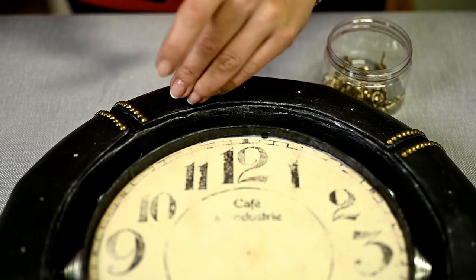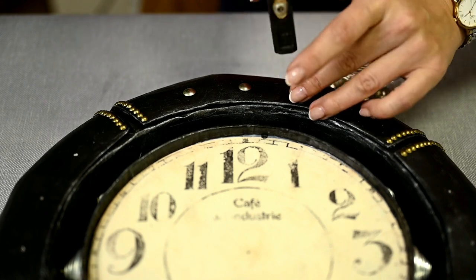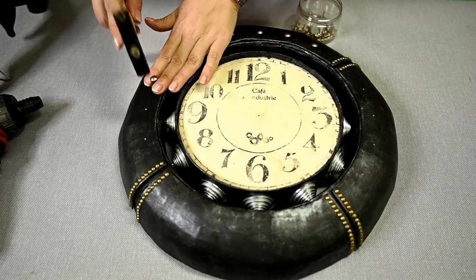I'm also applying some upholstery tacks along the markings around the dial. To make it easier to hammer, you can first poke holes in the base with a thick needle.